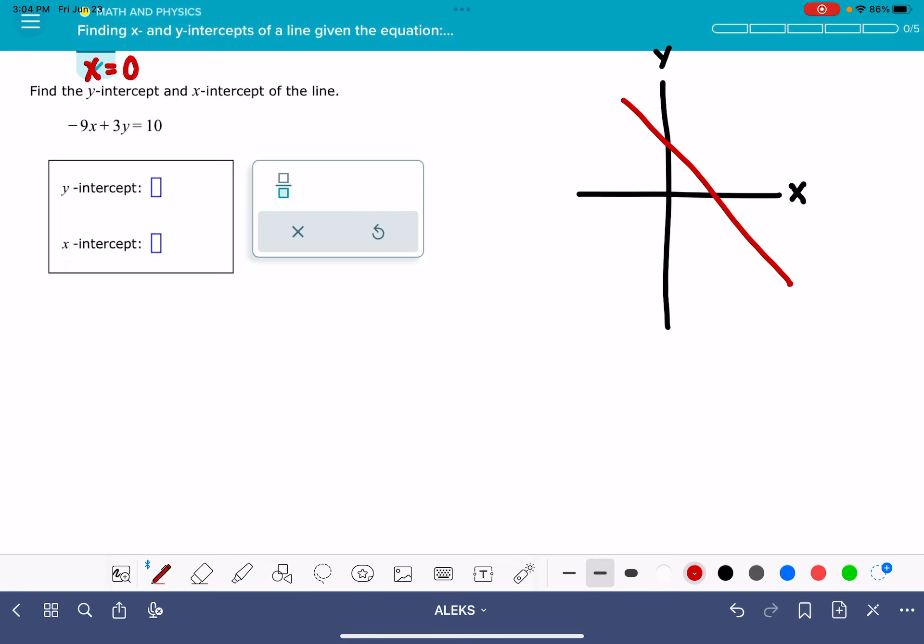The same is true for the x-intercept. The x-intercept is the place where our line crosses the x-axis. And at that point, what we do know is that y is equal to zero.